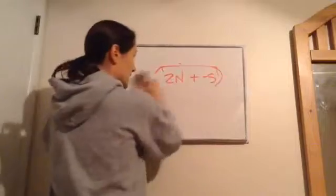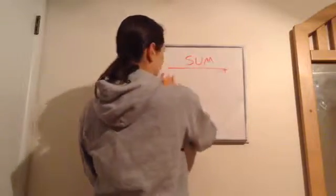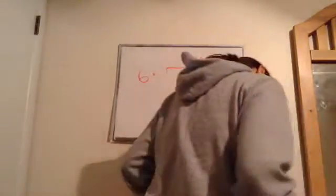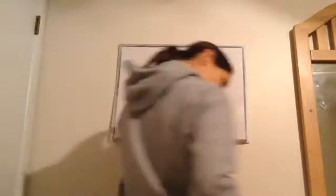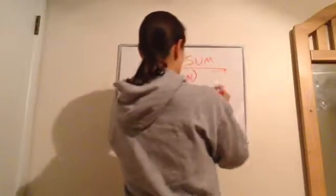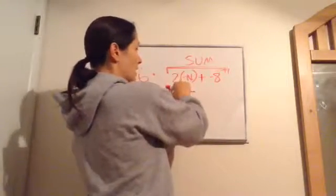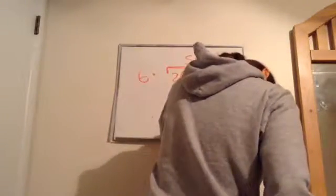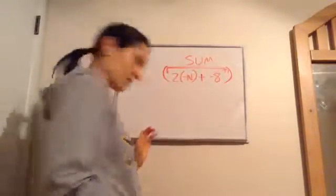Six times the sum of twice the opposite of a number and negative eight. So twice the opposite of a number is 2 times negative n. We find the sum of twice the opposite of a number and negative eight, then multiply that by six.